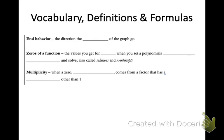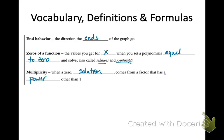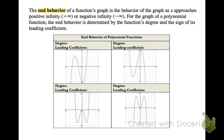End behavior is simply the direction that the ends of the graph go. Zeros of a function are the values you get for x when you set the polynomial equal to zero and solve. They are also called solutions and x-intercepts. And then finally, the concept of multiplicity — this is when a zero or solution comes from a factor that has a power other than 1. Those are the concepts we're going to be dealing with, along with things learned in earlier concepts, to graph these polynomials.